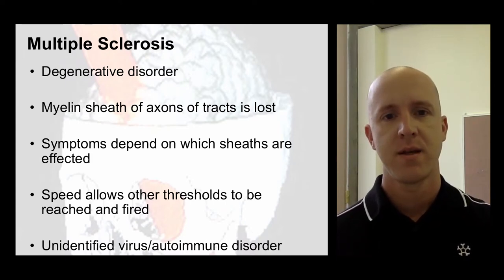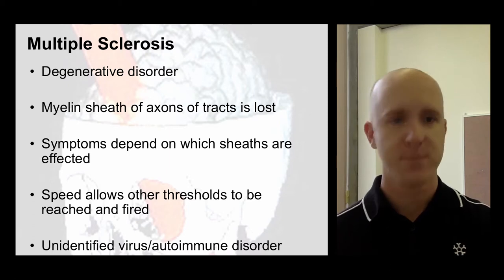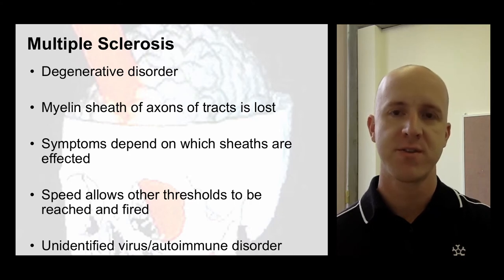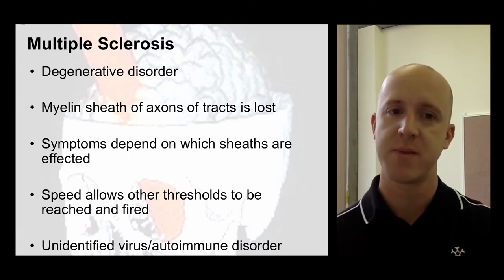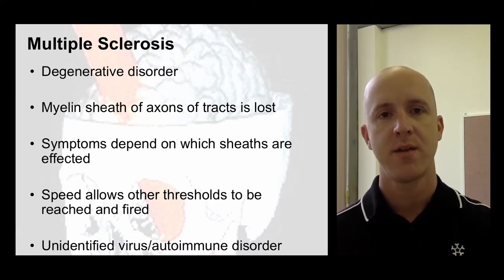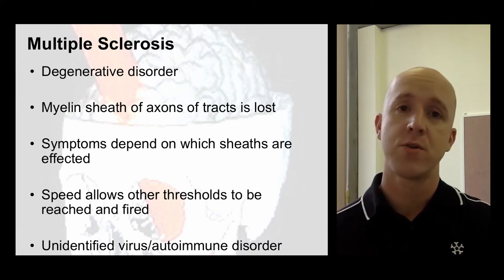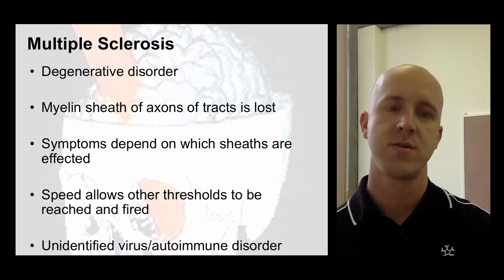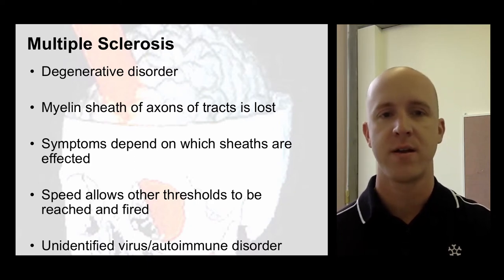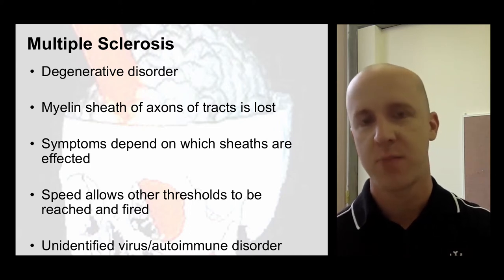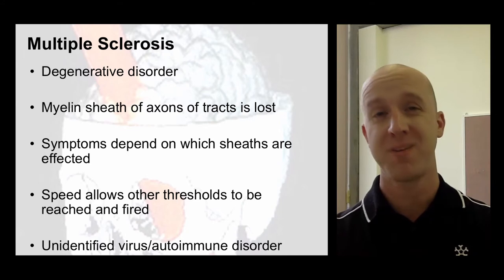Once the myelin sheath is damaged, the signals can no longer travel those distances at those speeds, so you lose a lot of the information — it never arrives, or arrives at the wrong time and is ignored. It occurs in a reasonably random order, so you'll see small signs beginning and then they creep in. One of the worst things is that it often leaves aspects of higher level functioning reasonably untouched. These little elements of damage to the axons are called scleroses and they gradually progress. There's not an awful lot yet that we can do to prevent this, but it tells us that the myelin sheath around the nerve is performing a vital function.